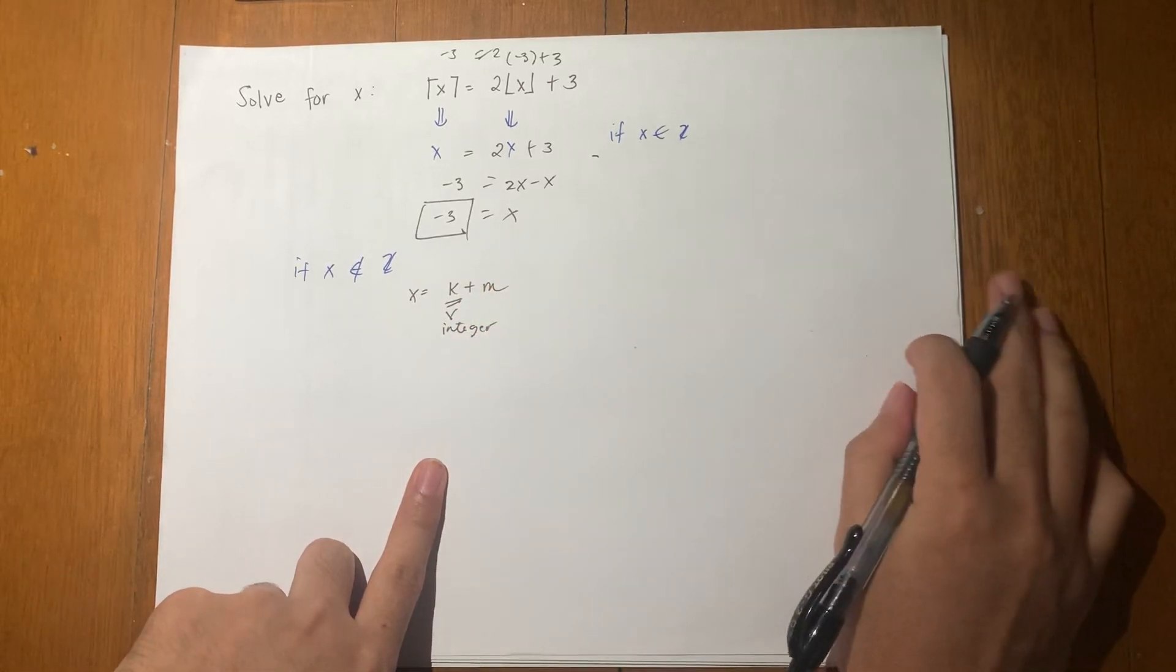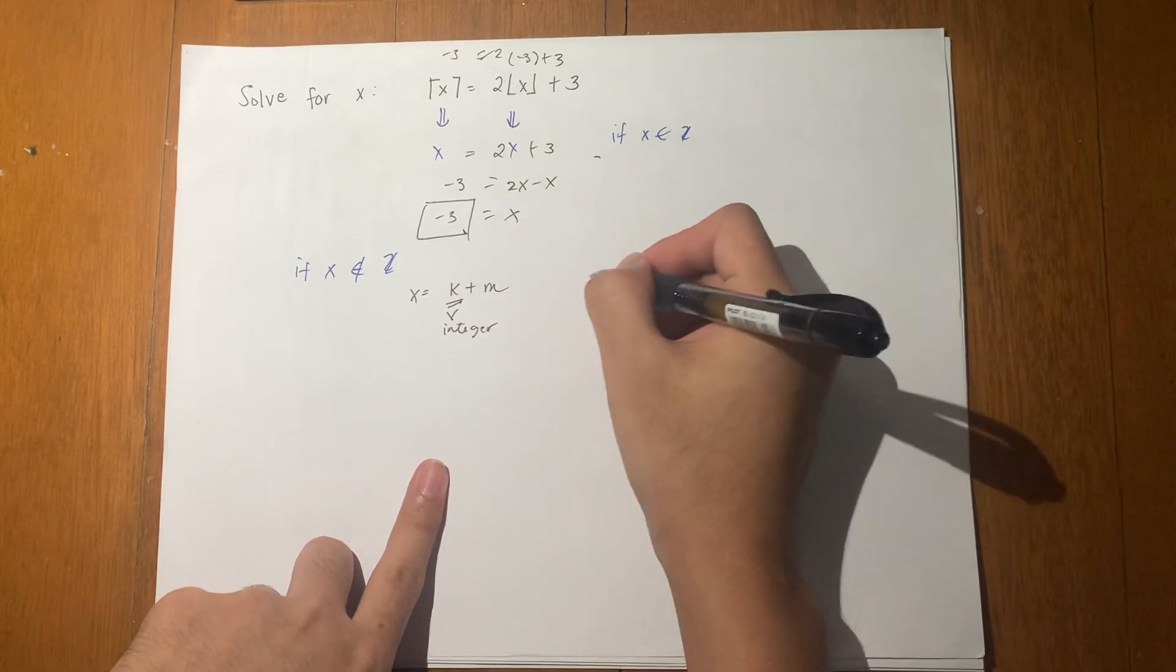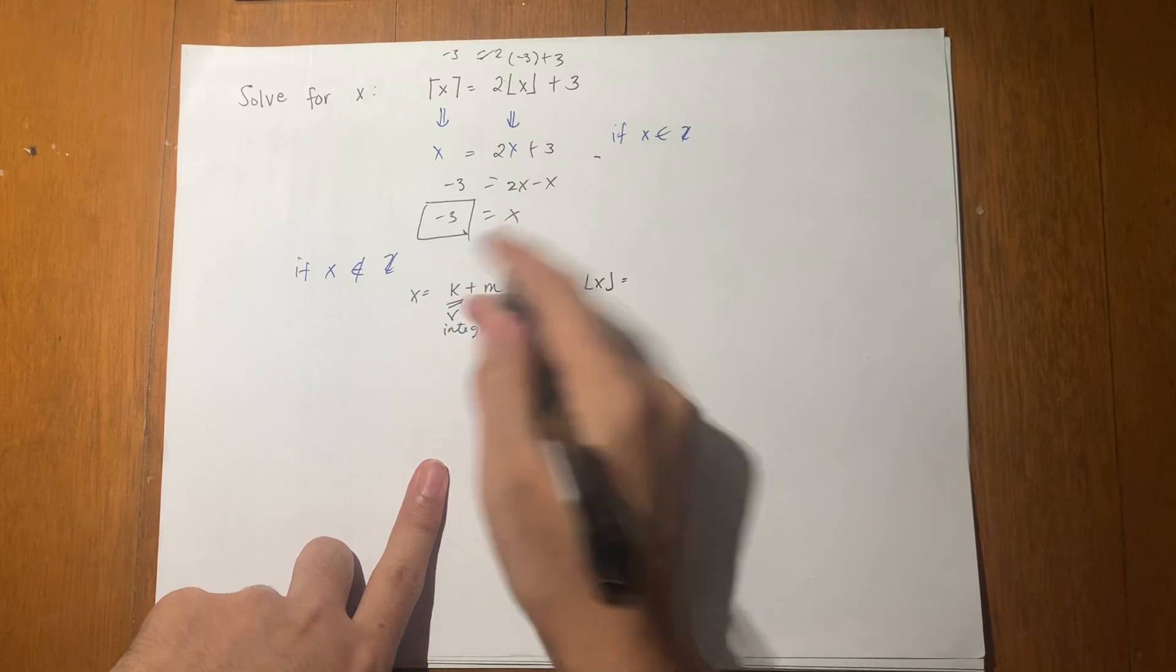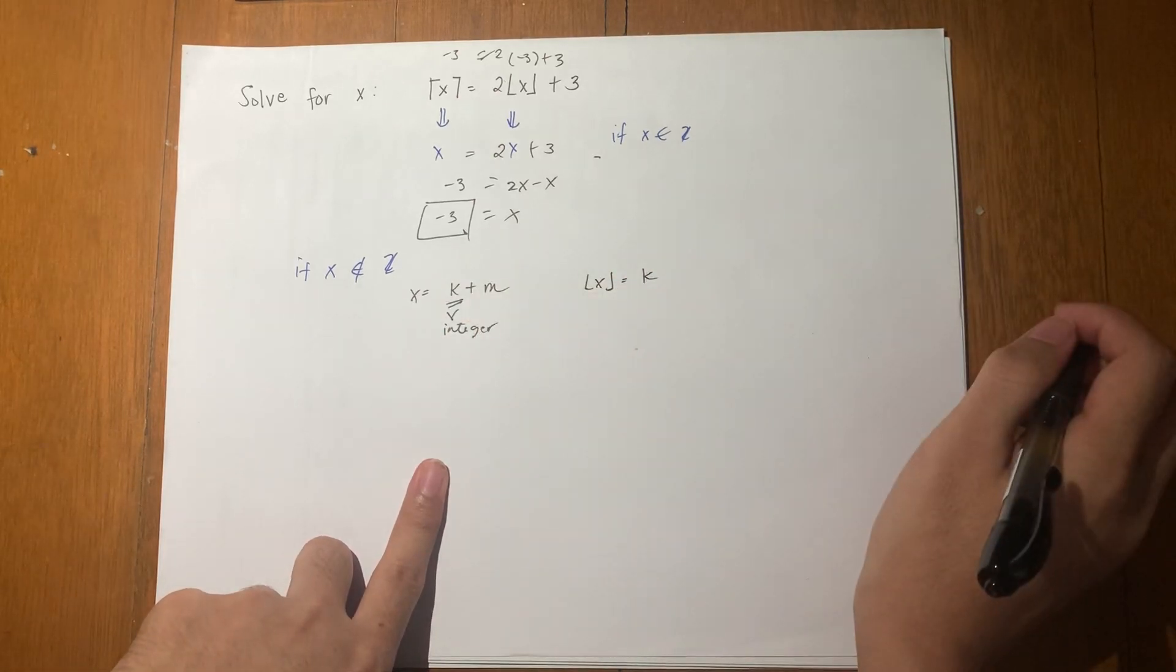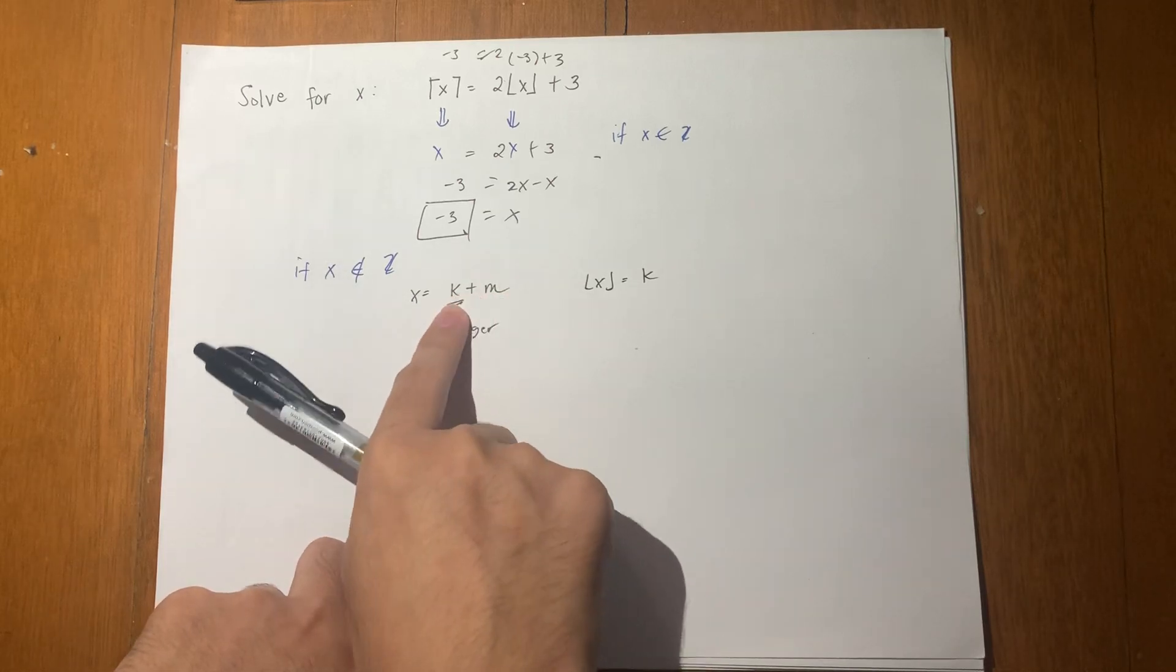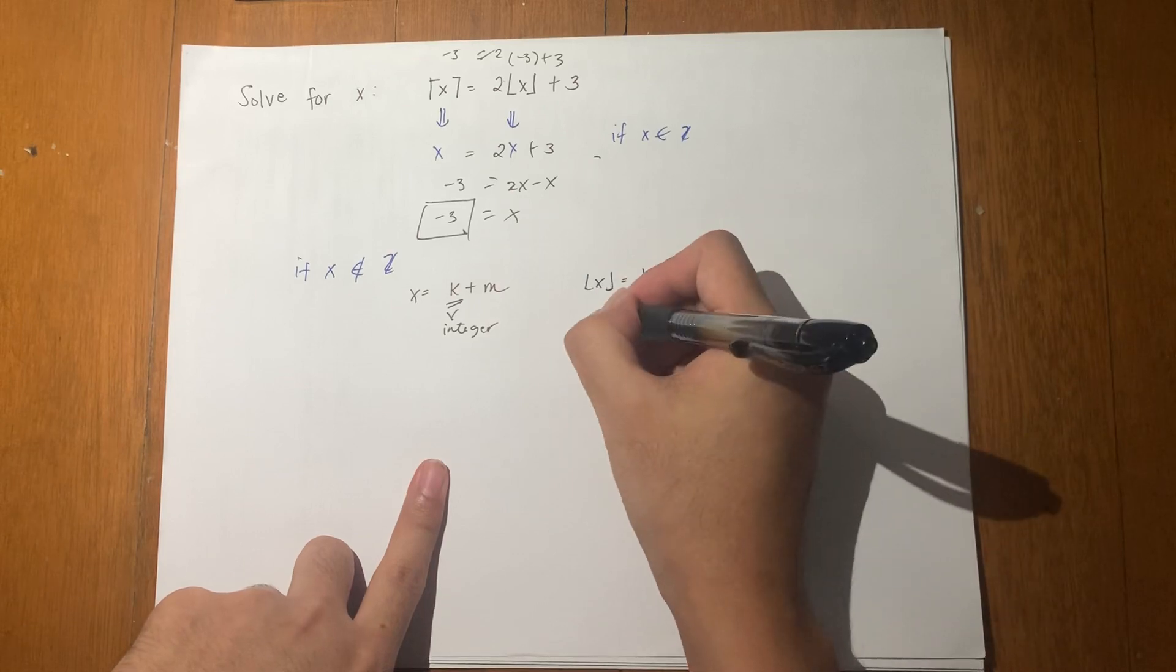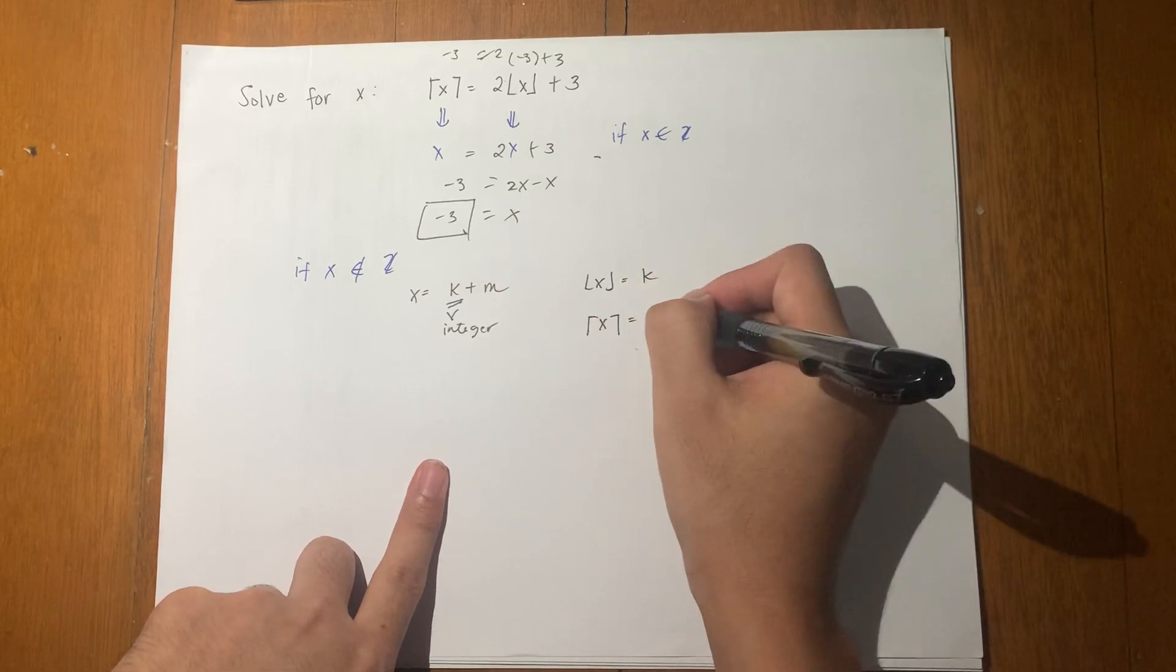What makes this approach good is that the floor function of x equals k, since it's just m (something) greater than an integer k. Then the ceiling of x becomes k plus 1.